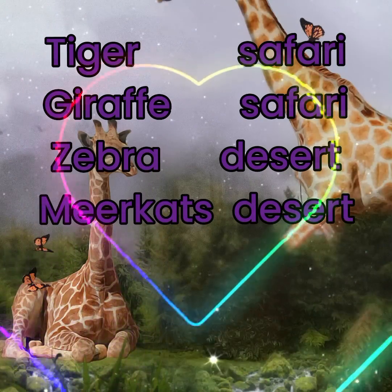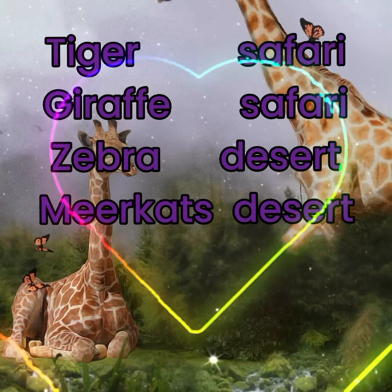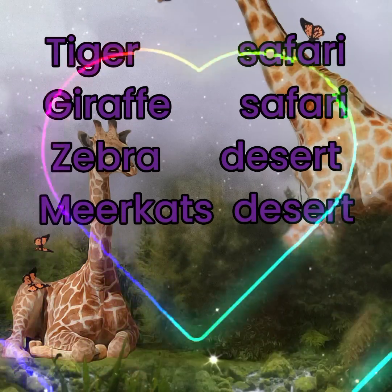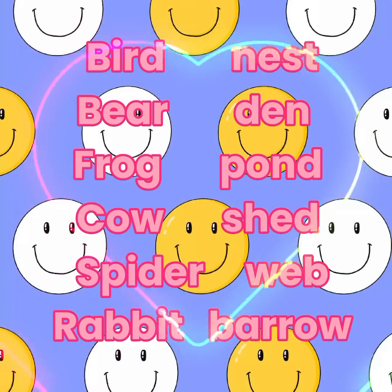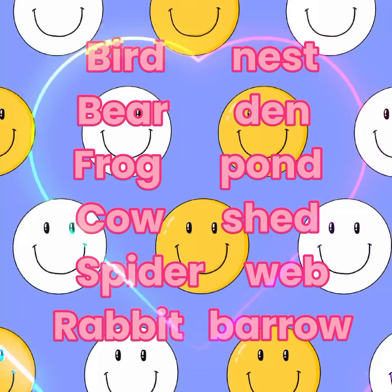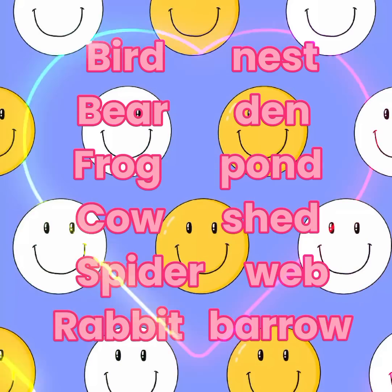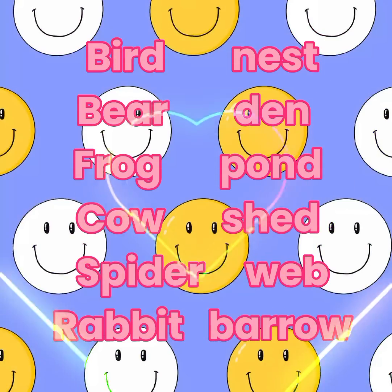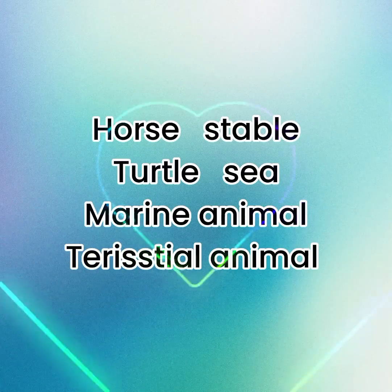Tiger lives in the safari. Giraffe lives in the safari. Zebra lives in the desert and safari. Meerkats specially live in the desert because the weather there is favorable for them. Bird lives in a nest. Bear lives in a den. Frog lives in a pond. Cow lives in a shed. Spider lives in a web. Rabbit lives in a burrow.